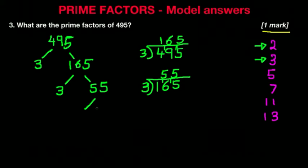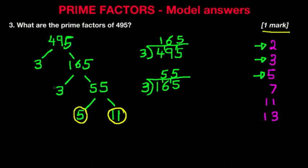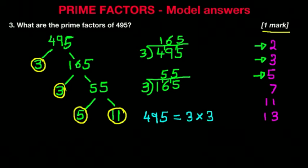Moving on to the number 55 — it cannot be divided by 2 because it is an odd number. Can it be divided by 3? The answer is no. The next prime number is 5. Can it be divided by 5? Well, we know it can — it's in the 11 times table. 55 divided by 5 is 11. 11 is also a prime number, so we have reached the end of our factor tree. We're going to circle all of the prime factors and write it down: the prime factors of 495 are 3 times 3 times 5 times 11.